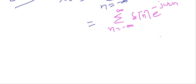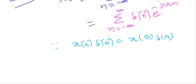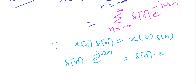Here we use the sampling property of δ(n). We know that x(n)·δ(n) = x(0)·δ(n). Using this property, δ(n)·e^(-jωn) = δ(n)·e^(-jω·0). Since e^0 = 1, we are left with only δ(n).